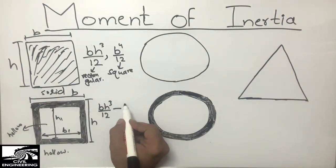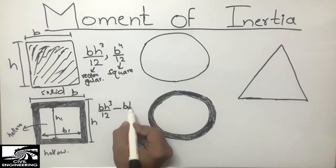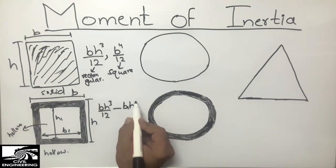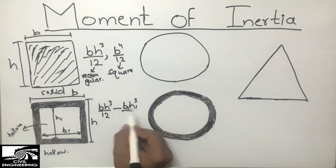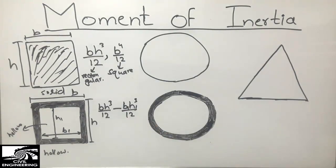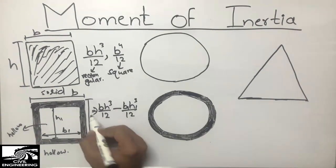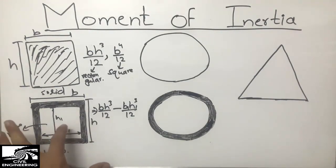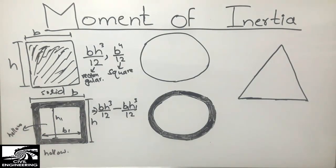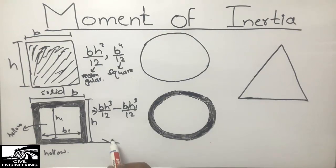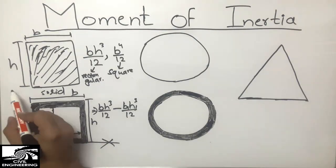So we subtract the inner moment of inertia: b1 times h1 cubed divided by 12. The full formula becomes bh³/12 minus b1h1³/12. This gives the moment of inertia of the hollow rectangular beam about the x-axis.